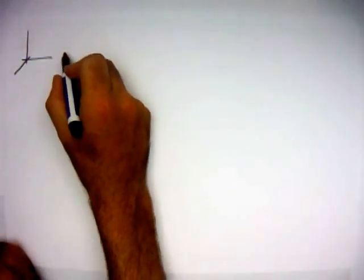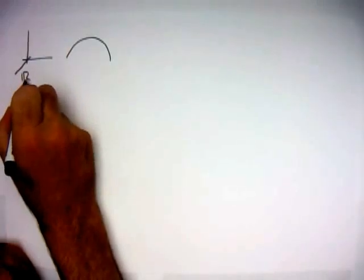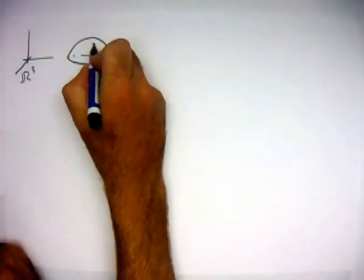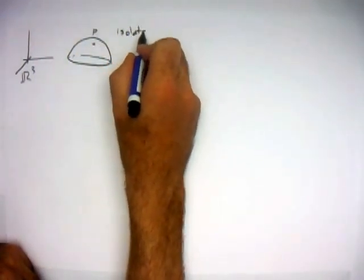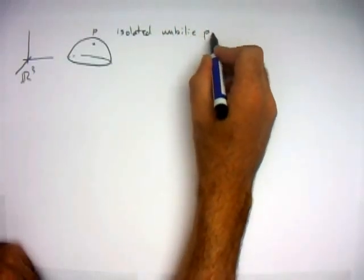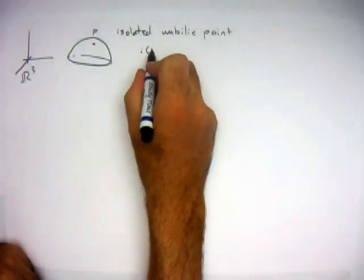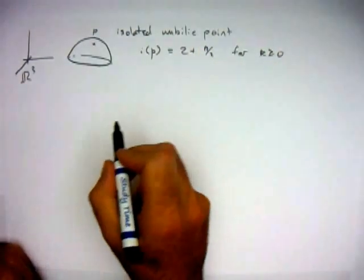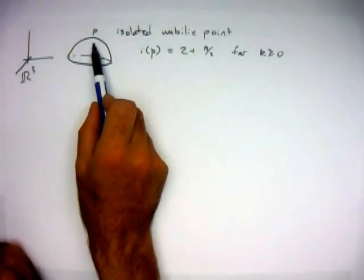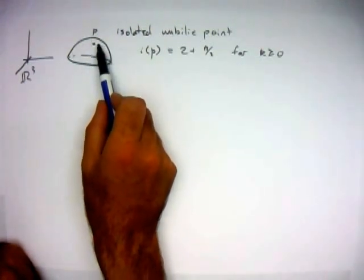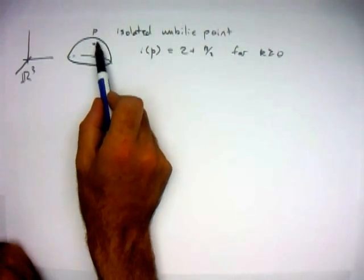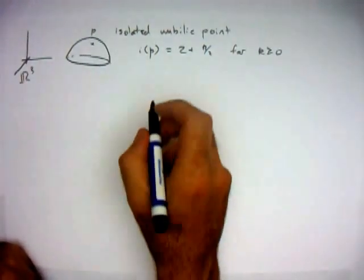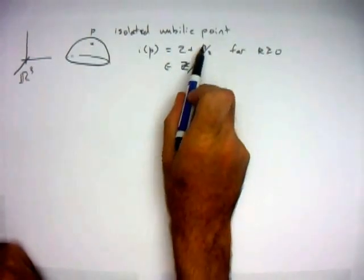The proof is by contradiction. We start with a piece of a convex surface in R^3 and suppose we have a point P which is an isolated umbilic point. We assume this is a counterexample to the theorem, so suppose the index of this umbilic point is equal to 2 plus k over 2, for k greater than or equal to 0. An umbilic point means the second fundamental form has a double eigenvalue at that point. Since it's isolated, in a neighborhood there will be a pair of principal foliations and a well-defined winding number, which is the index. The foliation may not be oriented, so this is an element of Z over 2 — a half integer, hence the k over 2.